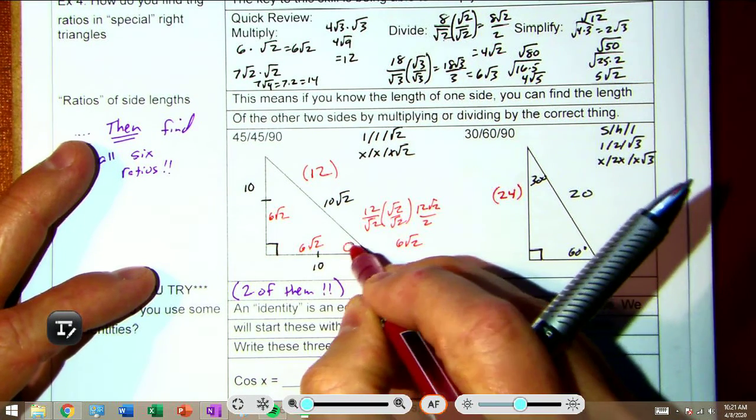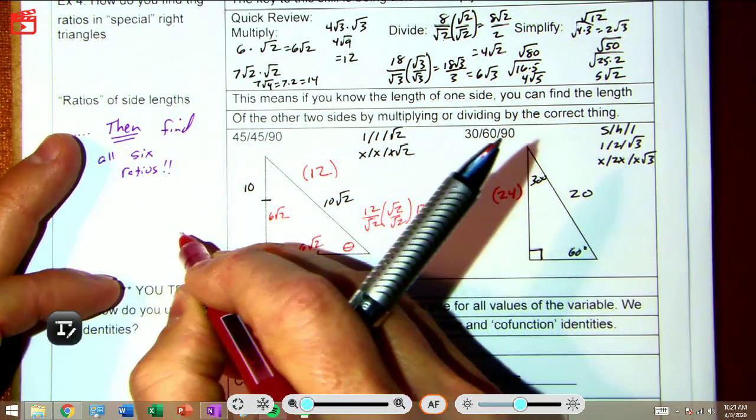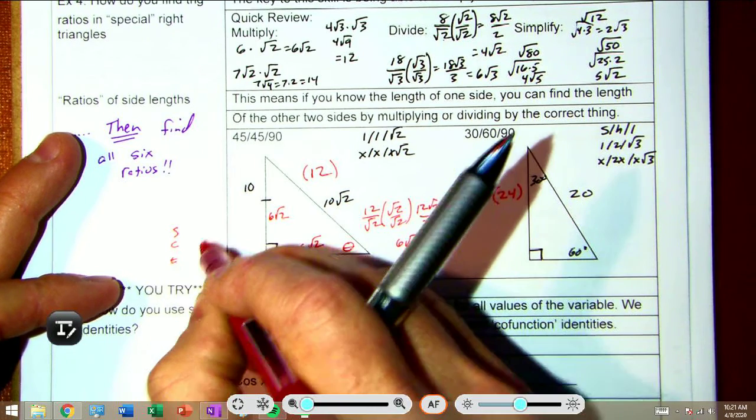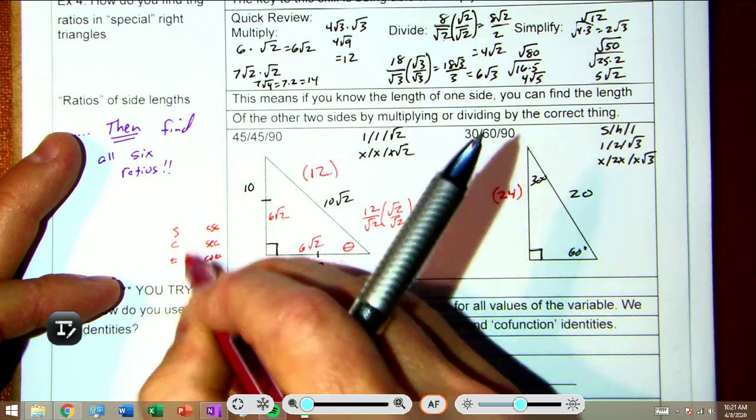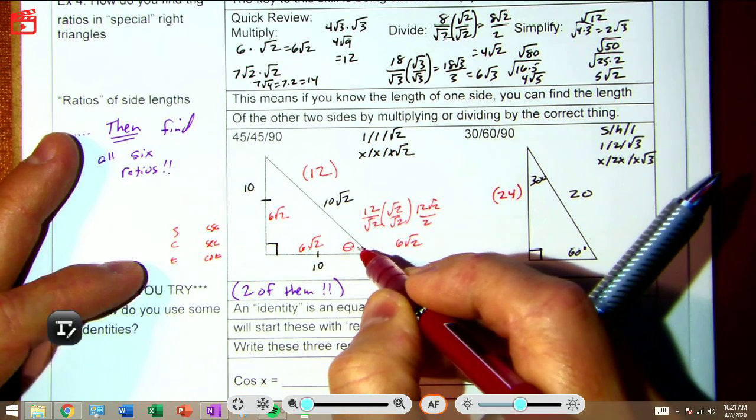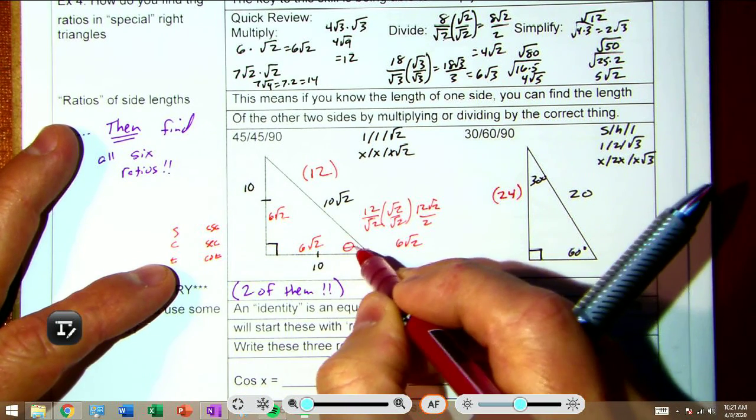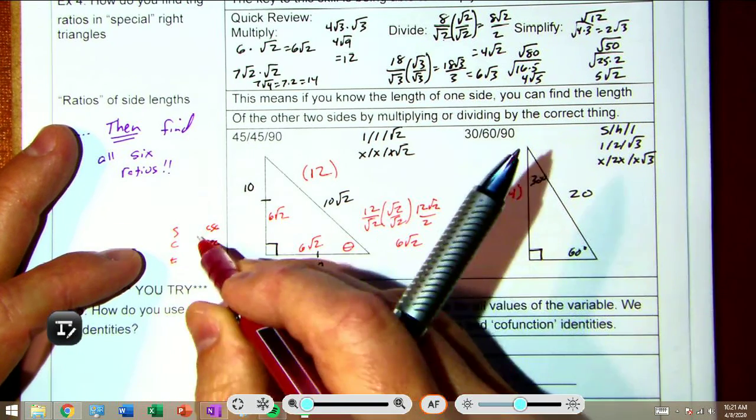And then you would need to, if they gave you a theta, you would want to write down your sine, cosine, and tangent, and then cosecant, secant, and cotangent. Write down your six trig function grid there and start with your angle theta and write and simplify all of those trig ratios.